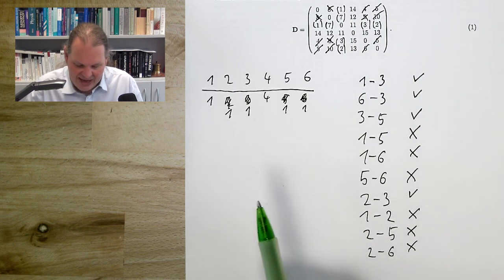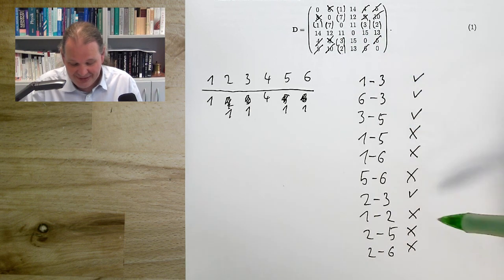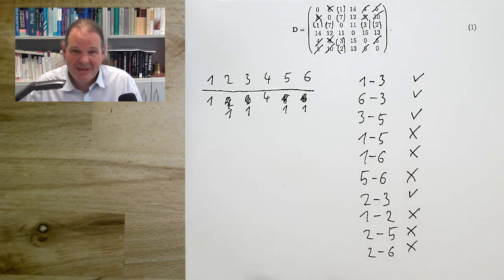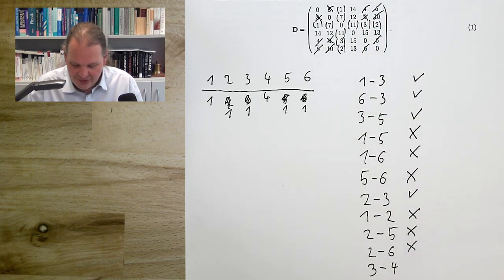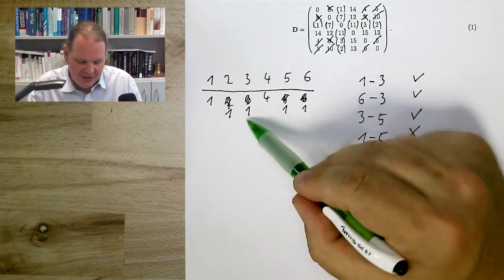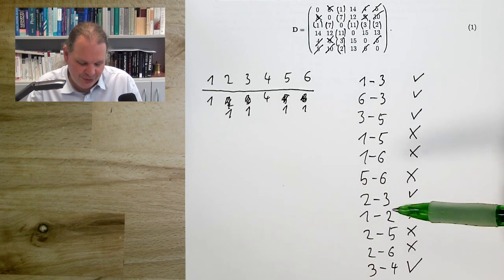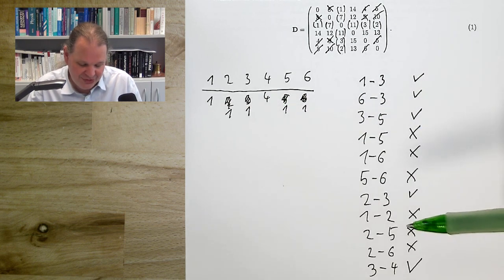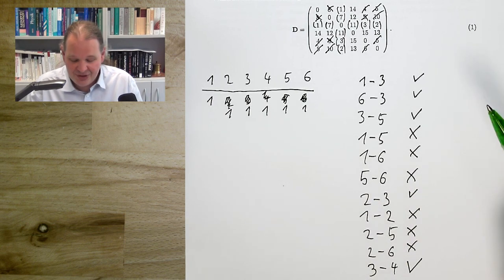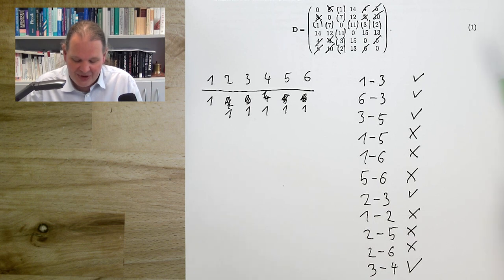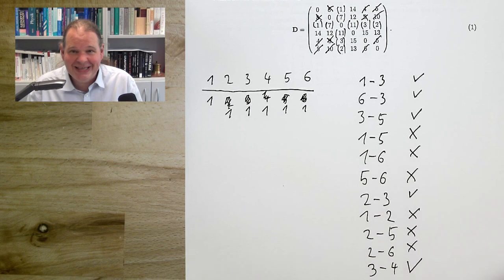The next is 11, between nodes 3 and 4. These are in different components — 4 is the only node not yet in component 1. We place this link and replace node 4's label with 1. Now all nodes are in component 1. We have found the minimum spanning tree, using the cheapest links except those that couldn't be part of the optimal solution.